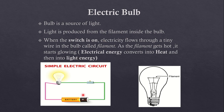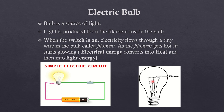When the switch is on, electricity flows from the positive terminal of the cell to the negative terminal of the cell. There is no any kind of breakage in the path and the bulb will glow. When the switch is on, electricity flows through a tiny wire in the bulb — that tiny wire is known as filament. As the filament gets hot, it starts glowing. Electrical energy converts into heat energy, and then this heat energy converts into light energy.